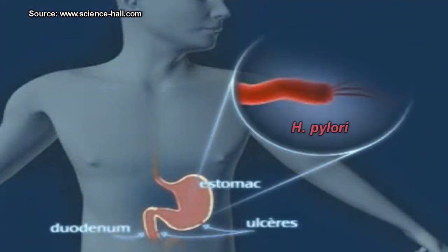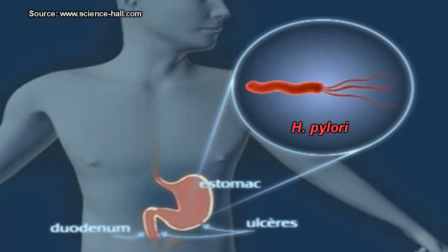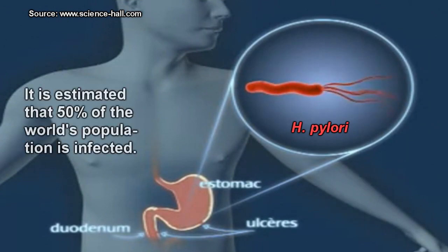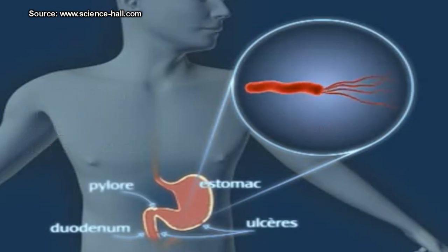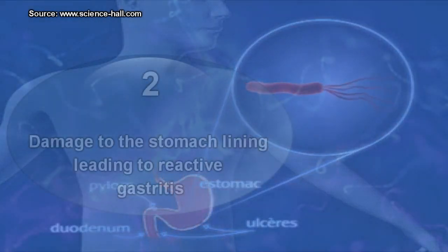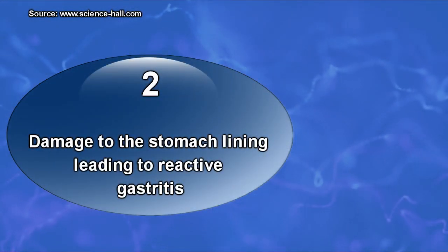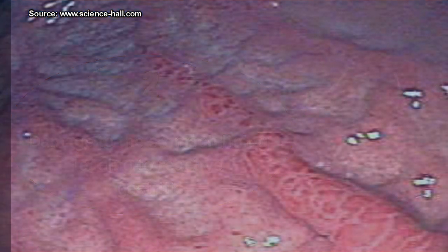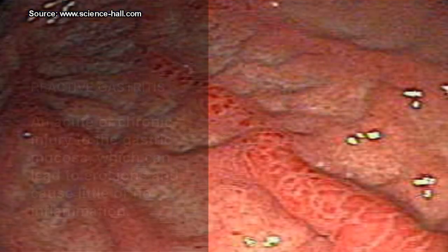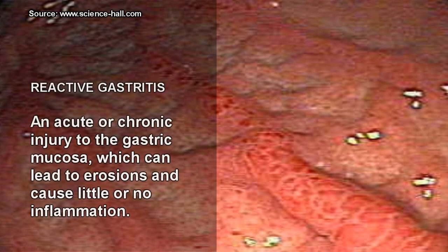Helicobacter pylori infection is generally acquired in childhood, and it is estimated that 50% of the world's population is infected, but the vast majority do not develop significant clinical complications. Some people suffer from reactive gastritis, which is an acute or chronic injury to the gastric mucosa that can lead to erosions and cause little or no inflammation.